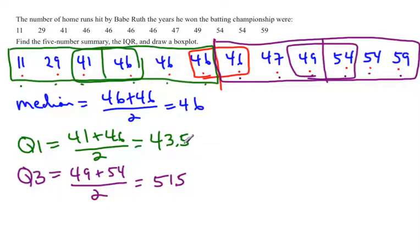So now all that's left is to actually write the five number summary. The five number summary is the minimum, which is, in this case, 11. The Q1, which is 43.5. The median, which is 46.